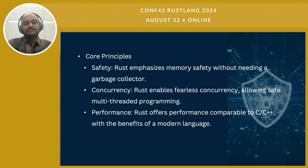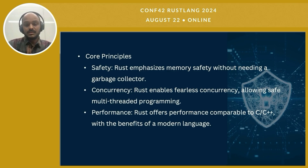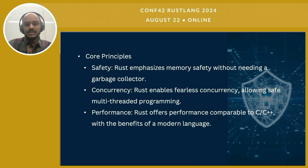First, safety: Rust emphasizes memory safety without the need for a garbage collector, helping prevent common programming errors like null pointer dereferences and buffer overflows, which are common sources of security vulnerabilities. Next, concurrency: Rust enables fearless concurrency, allowing developers to write multi-threaded programs safely. Rust's ownership and borrowing system ensures that data races — where two threads access the same data at the same time — are eliminated at compile time, making concurrent programs much safer. Finally, performance: Rust offers performance comparable to C and C++, but with the added benefits of modern language features, giving you the speed and efficiency needed for system-level programming without sacrificing safety or reliability.